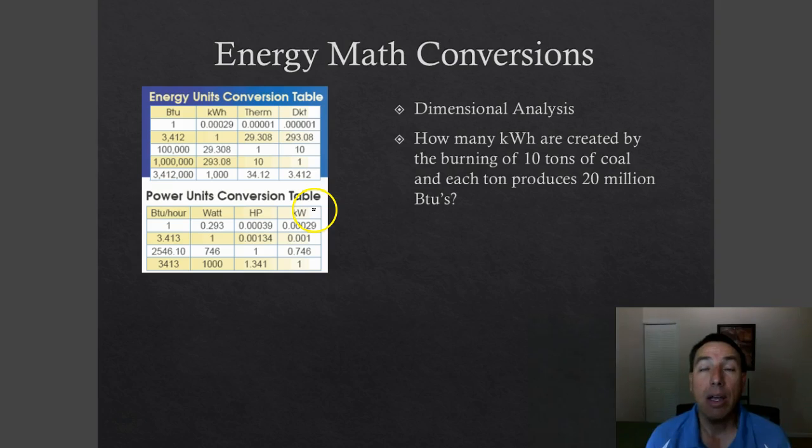Math is going to be very important in this section. We're going to start using dimensional analysis, just like we were before. You're going to have to convert between these units. You want to make sure you use your units in your calculations. Use the picket fence if you're comfortable with that. It's the best way to ensure you're going to get it correct. We have 10 tons of coal and we're going to assume that each ton produces 20 million BTUs. So I want to know how many kilowatt hours are created from burning that 10 tons of coal. We're going to assume 100% efficiency here.